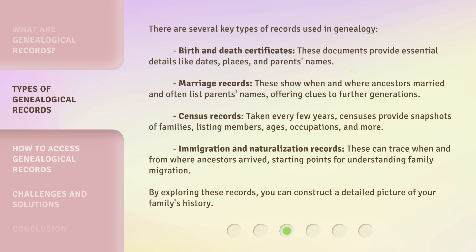Census records, taken every few years, provide snapshots of families listing members, ages, occupations, and more. Immigration and naturalization records can trace when and from where ancestors arrived, serving as starting points for understanding family migration. By exploring these records, you can construct a detailed picture of your family's history.